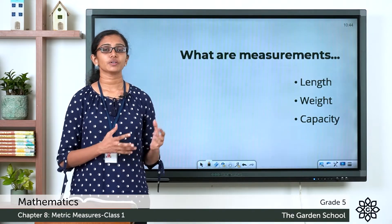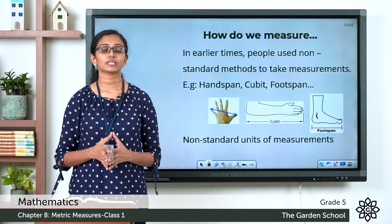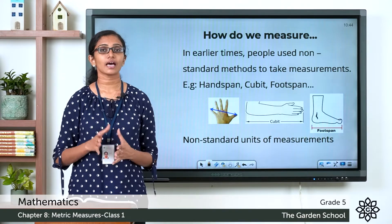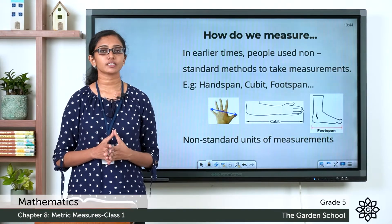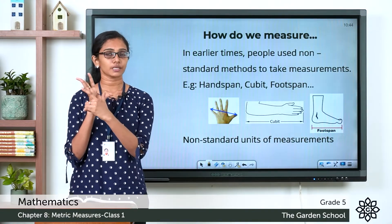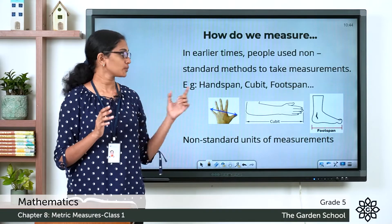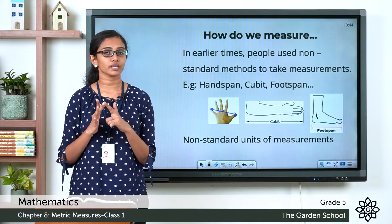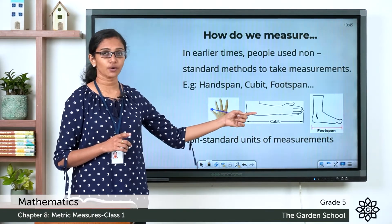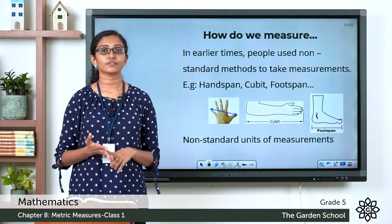So how do we measure length, weight, and capacity? In earlier days, people used different non-standard methods. For measuring lengths, they would use a hand span, a foot span, a cubit, and so on. The hand span is the distance from the tip of your thumb to the tip of your small finger when your palm is spread out. The cubit is the distance from the tip of your middle finger to the elbow. The foot span is the length from the tip of your toe to the back of your heel.